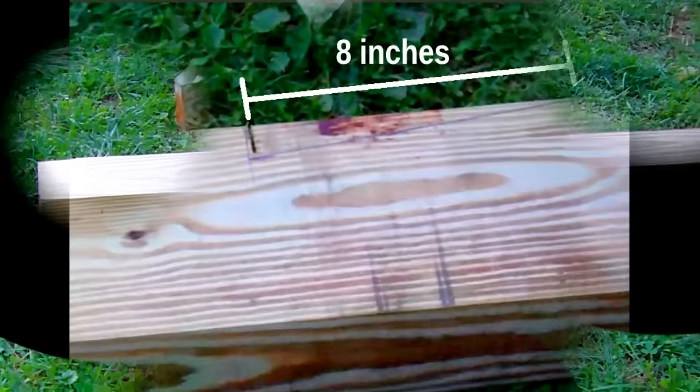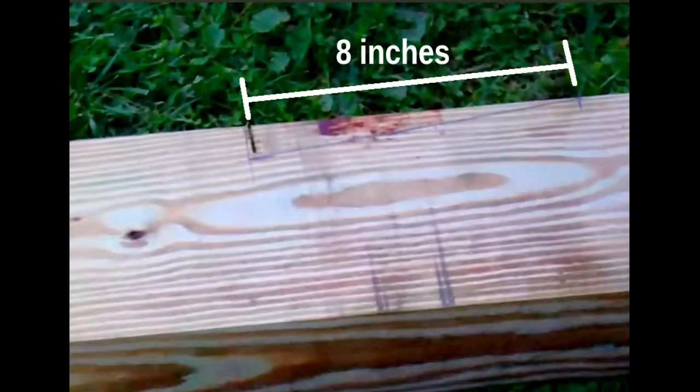Next, measure 8 inches further out from the notch you just made. On the face side of your 4x6 or 4x8, draw a line connecting the 1-inch deep notch and the mark you just made. Set your circular saw to full depth and cut the line.